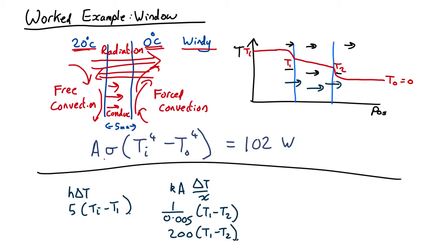Finally we have forced convection on the outside because of the wind. We use the same equation as before but now H is about 30. So that's going to be about 30 times (T2 minus T_out). All three of these must be equal to each other because we're assuming steady flow — the heat is not building up anywhere. If it were building up somewhere the temperature profile would change until it came into steady state, which after a minute or two it probably will be.